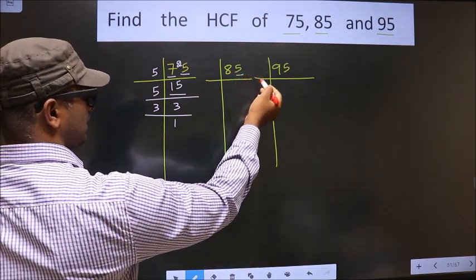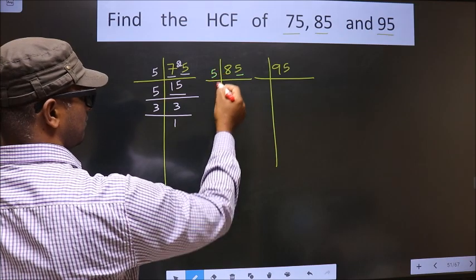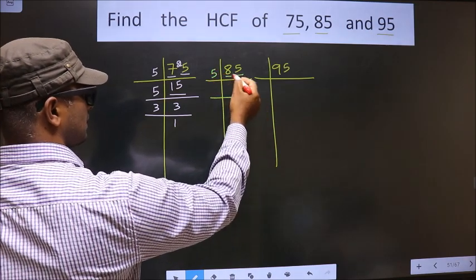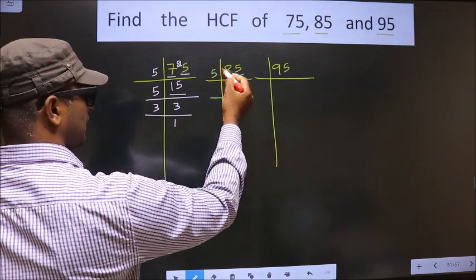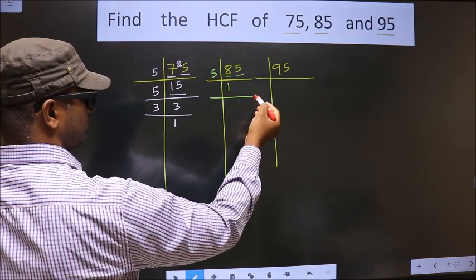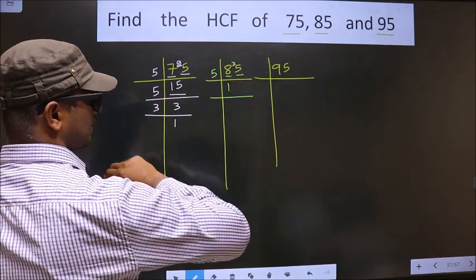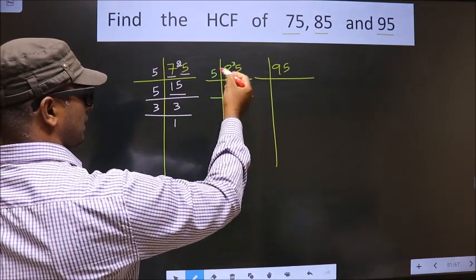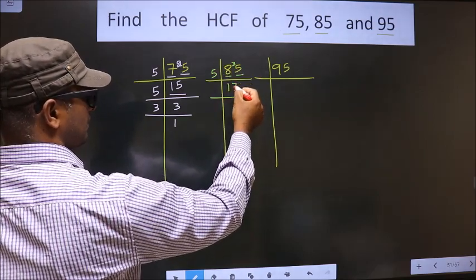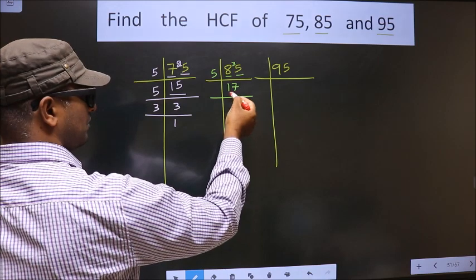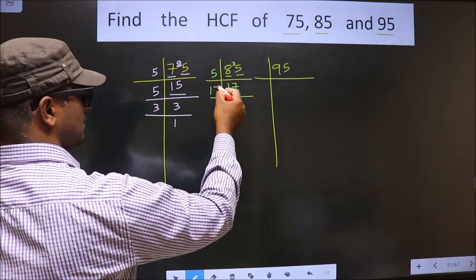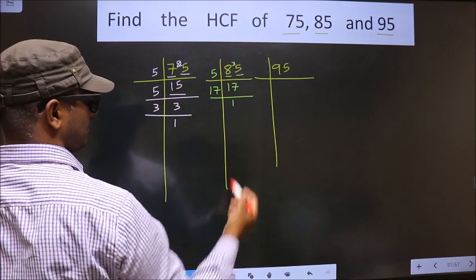Now for this number, last digit is 5, so we take 5 here. First number is 8. A number close to 8 in five table is 5 once 5. 8 minus 5 is 3, carried forward making it 35. 5 times 7 is 35. Now here we have 17. 17 is a prime number, so we take 17 once 17.